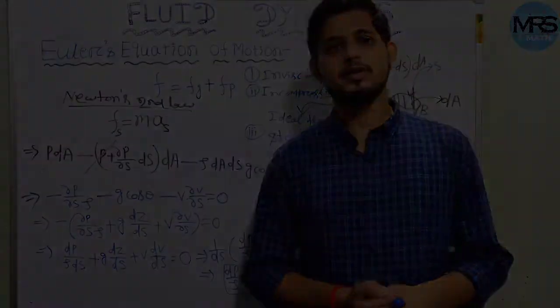Draw a reference line along the x-axis. Let dZ be the small elevation of point B with respect to point A. Then cos θ equals dZ/dS, so we can replace cos θ with dZ/dS. Now we have calculated all the forces acting on this element.